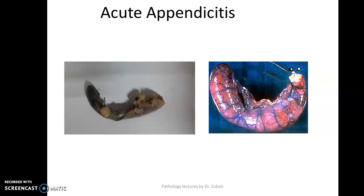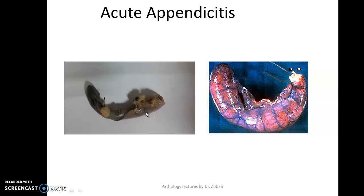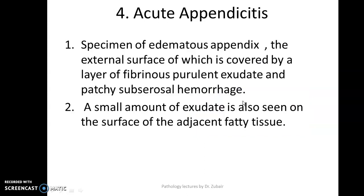The next specimen is very common — every college will keep it: specimen of appendix, acute appendicitis. For comparison, I have kept an actual mounted specimen alongside an image of a fresh specimen, since mounted specimens sometimes tend to lose their shine and classical appearance. You have a specimen of inflamed appendix; the outer surface is dark brown and congested, and the serosa becomes dull when inflamed. The specimen of edematous appendix shows an external surface covered by a layer of fibrinous purulent exudate and patchy sub-serosal hemorrhage, with a small amount of exudate also seen on adjacent fatty tissue.